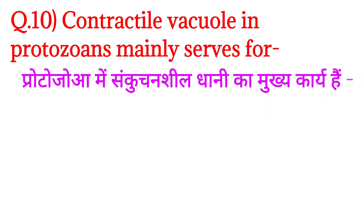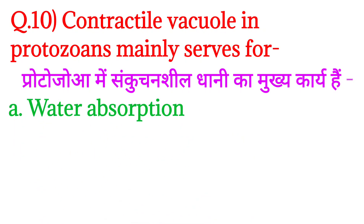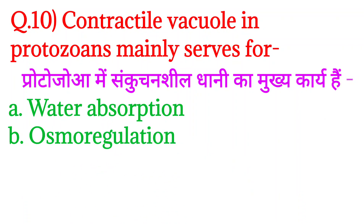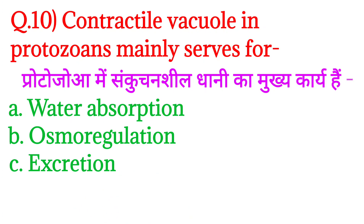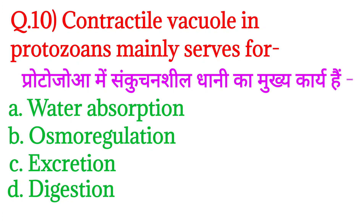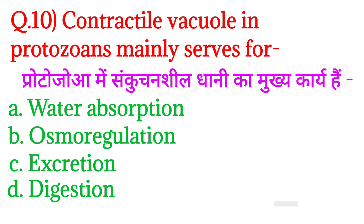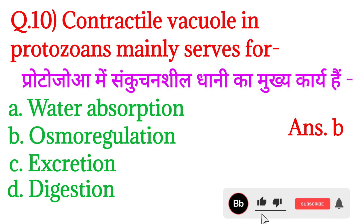Next question number 10 — contractile vacuole in protozoans mainly serves — Protozoa mein sankuchanseel dhani ka mukhya kary kya hota hai? Option A: water absorption, option B: osmoregulation, option C: excretion, and option D: digestion. Iska answer hoga option number B: osmoregulation.